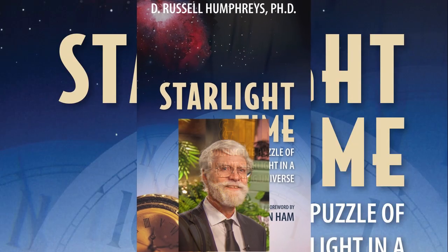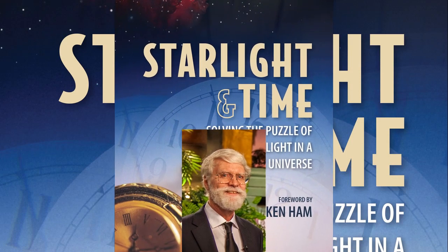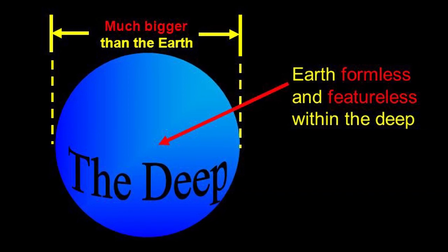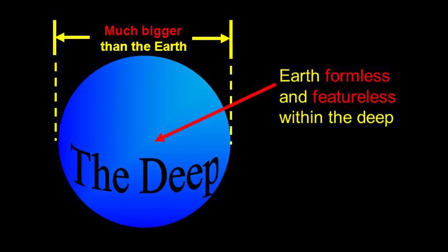In 1994, Russell Humphreys published Starlight and Time, and took Einstein's ideas in a new direction. Using the Bible as his guide, Humphreys scenario begins with the universe as a white hole composed of a gigantic mass of water. Being such a massive body,